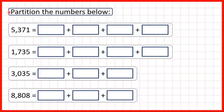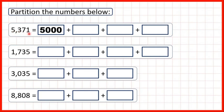We need to partition the numbers below. When we partition numbers, what we're doing is showing the value of each digit, and we usually represent a partitioned number as an addition. So first, we have five thousand three hundred and seventy-one. This five is in our thousands place, so that represents five thousand — that's five followed by three zeros, because after the five, we have three digits.